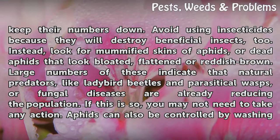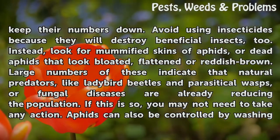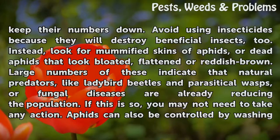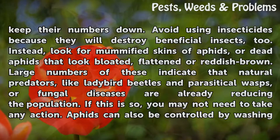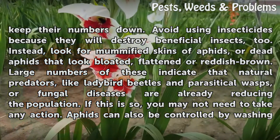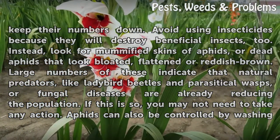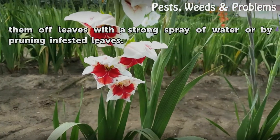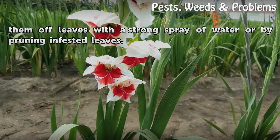Avoid using insecticides because they will destroy beneficial insects too. Instead, look for mummified skins of aphids, or dead aphids that look bloated, flattened or reddish-brown. Large numbers of these indicate that natural predators, like ladybird beetles and parasitical wasps, or fungal diseases are already reducing the population. If this is so, you may not need to take any action. Aphids can also be controlled by washing them off leaves with a strong spray of water or by pruning infested leaves.